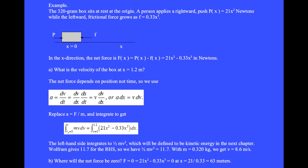Question B. Where will the net force be 0? F equals 0 equals 21x squared minus 0.33x cubed equals 0 at x equals 21 over 0.33 equals 63 meters.